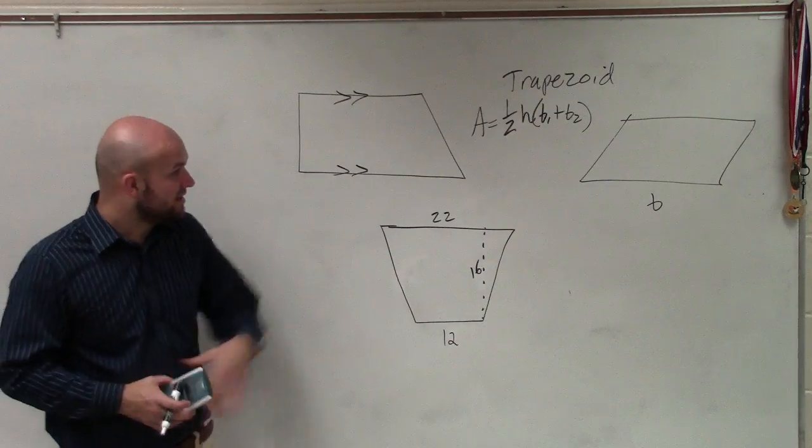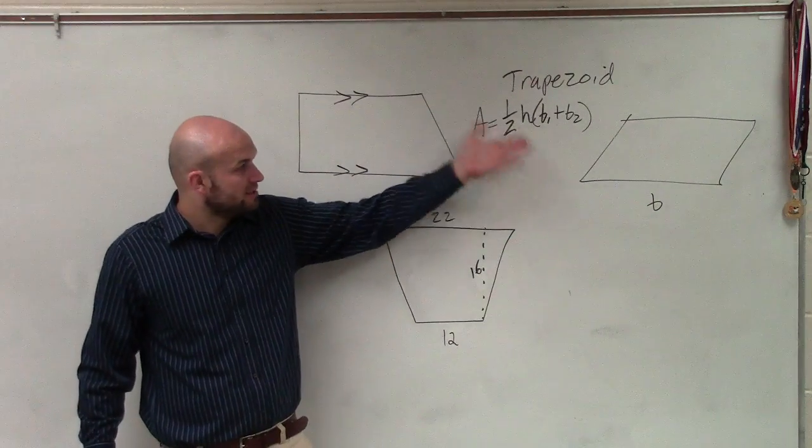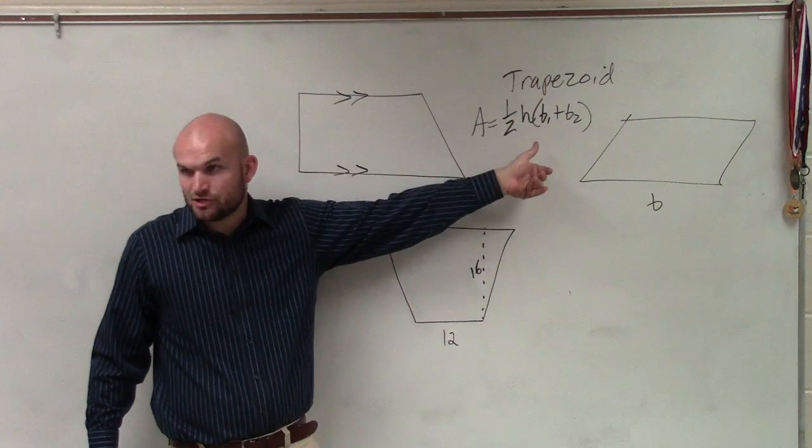So here we're trying to identify the area of the trapezoid. Here's our formula for the area of the trapezoid: area equals one half times height times base one plus base two, right?